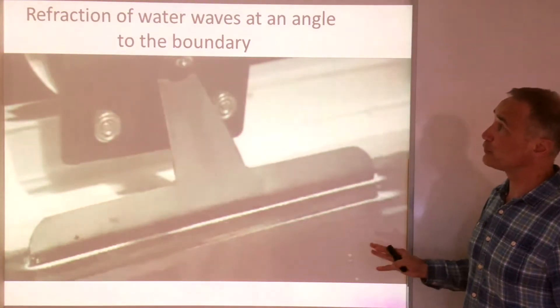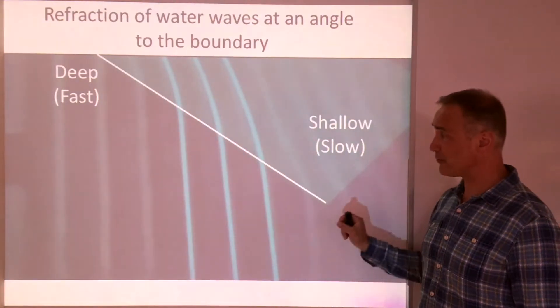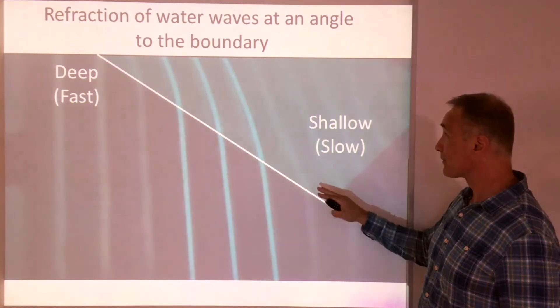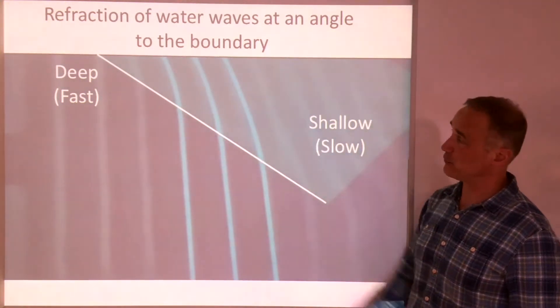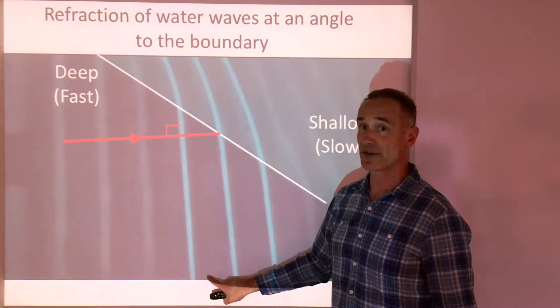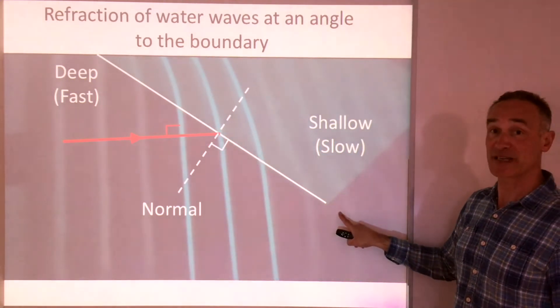Those waves were travelling along the normal. What happens if they come at an angle to the boundary? When the sheet is at an angle, the waves also change direction — the wave fronts bend as they reach the plastic sheet. Let's look in more detail. We have the boundary between deep and shallow water. The direction of travel is at right angles to the wave fronts. Where the waves hit the boundary, we draw the normal at right angles to the boundary between deep and shallow.